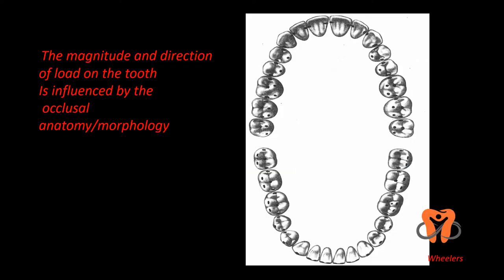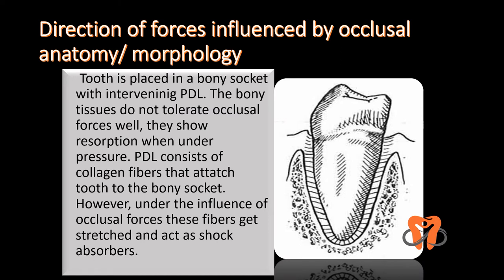The importance of occlusal morphology is that the magnitude and direction of load on the tooth gets influenced by it. Now you can understand the importance of your dental anatomy carving classes. The tooth is placed in a bony socket with intervening periodontal ligament fibers. The bone does not tolerate occlusal forces as well — it is these periodontal ligament fibers, made up of collagen, that get stretched under the influence of occlusal forces and act as shock absorbers.